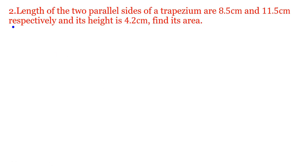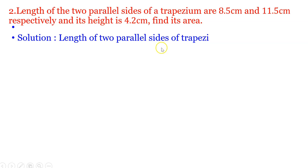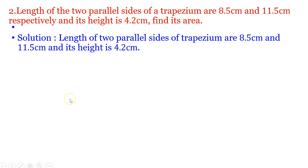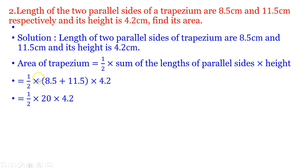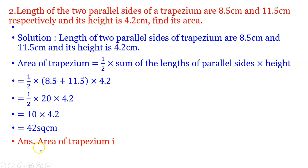Next example: The lengths of two parallel sides of a trapezium are 8.5 cm and 11.5 cm respectively, and its height is 4.2 cm. Find its area. Solution: Area = 1/2 × (8.5 + 11.5) × 4.2 = 1/2 × 20 × 4.2 = 10 × 4.2 = 42 square cm. Hence the area of the trapezium is 42 square cm.